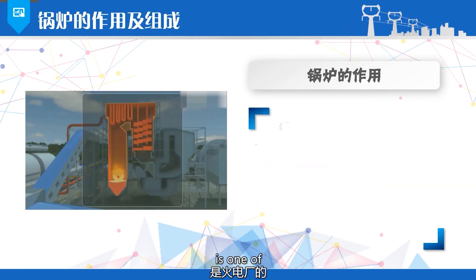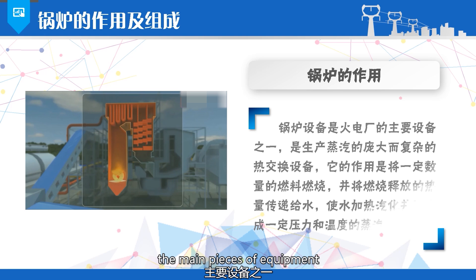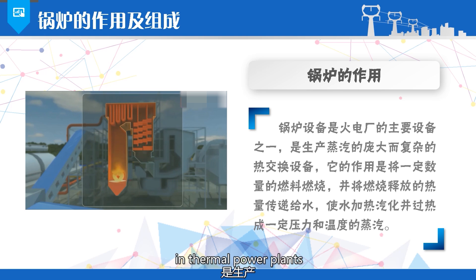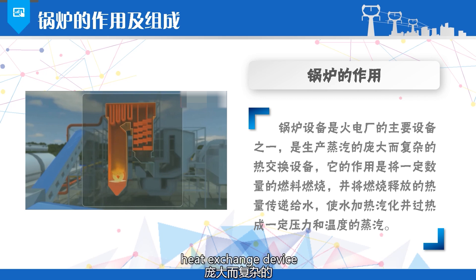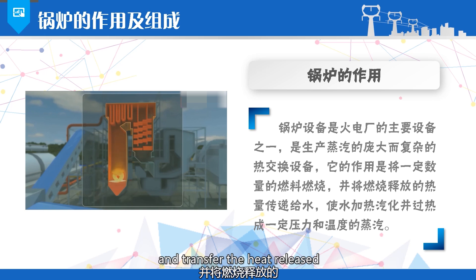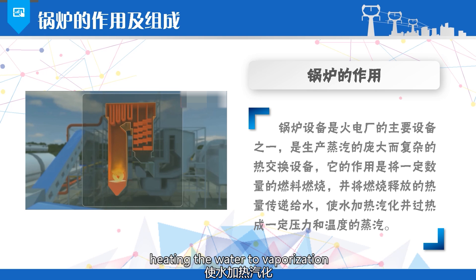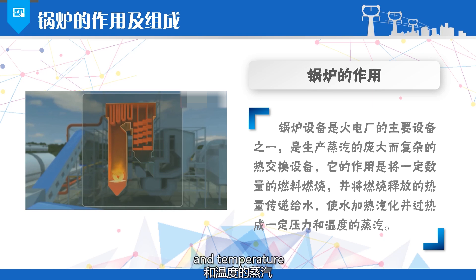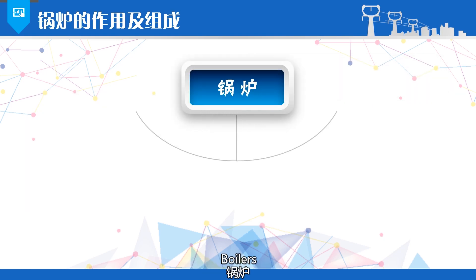Boiler equipment is one of the main pieces of equipment in thermal power plants, serving as a large and complex heat exchanging device that produces steam. Its function is to combust a certain amount of fuel and transfer the heat released from combustion to water, heating the water to vaporization and superheating it to a certain pressure and temperature.